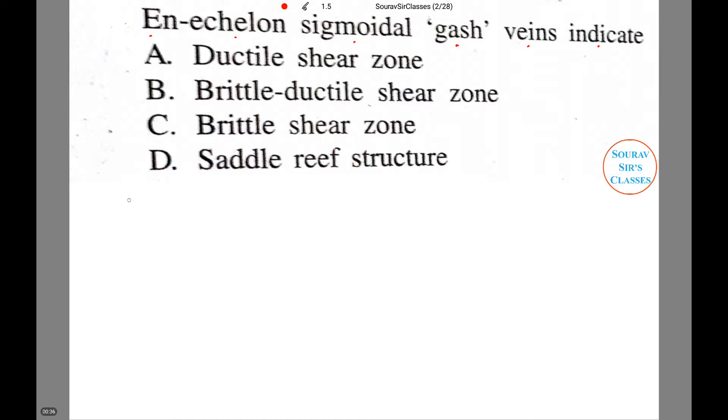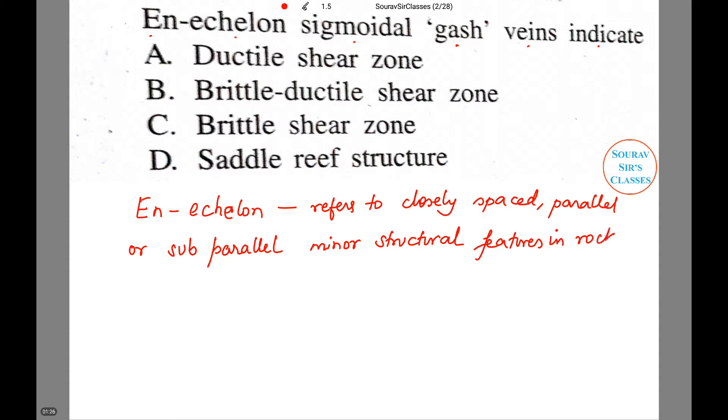Now first let us see what this very term N-Echelon means. This refers to closely spaced parallel or subparallel minor structural features in rock that are oblique to the overall structural trend.